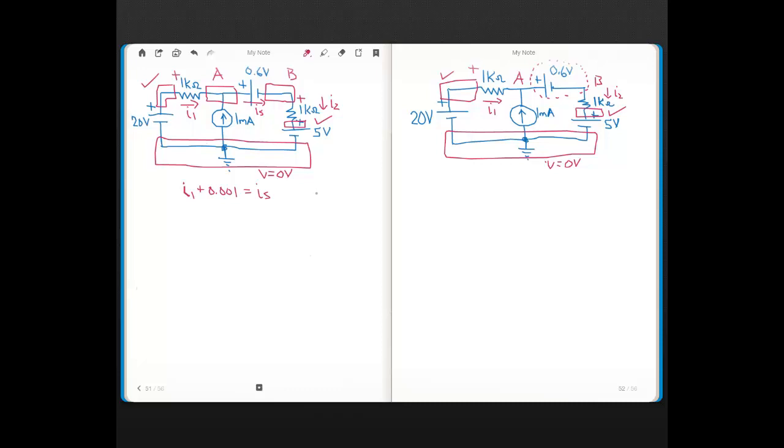At node B, we'll just have that IS is equal to I2. And then we can just plug that up here, that IS equals I2.